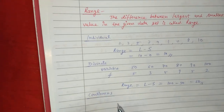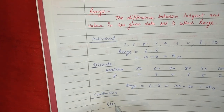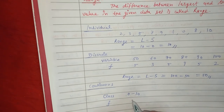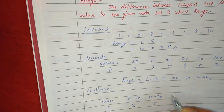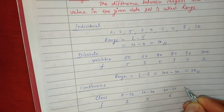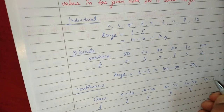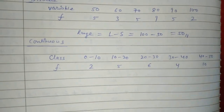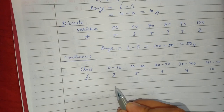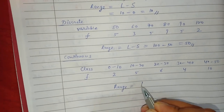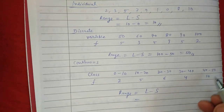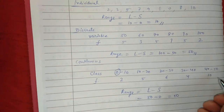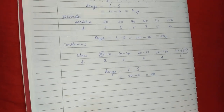Now let's look at a continuous series of data. For example, we have a class and a frequency: 0–10 with 2, 10–20, 20–30 with 6, 30–40 with 4, 40–50 with 10. For this continuous data, the largest value is 50 and the smallest value is 0, so the range is 50 minus 0, which equals 50.